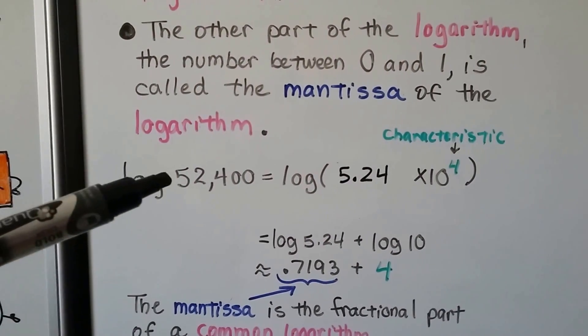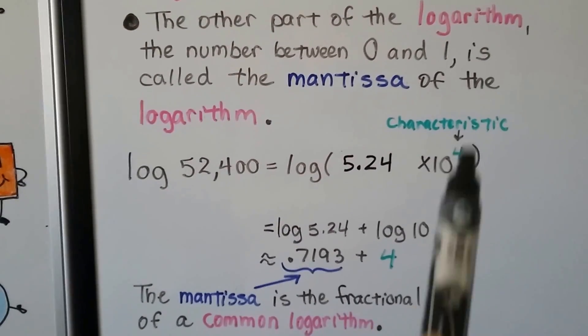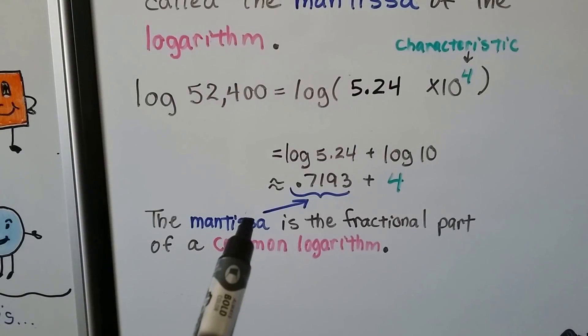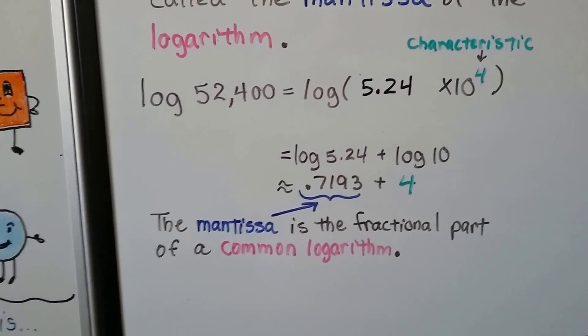So we did this one and we wrote it as 5.24 times 10 to the fourth. That little fourth is the characteristic. And this 0.7193 is the mantissa. It's the fractional part of a common logarithm.